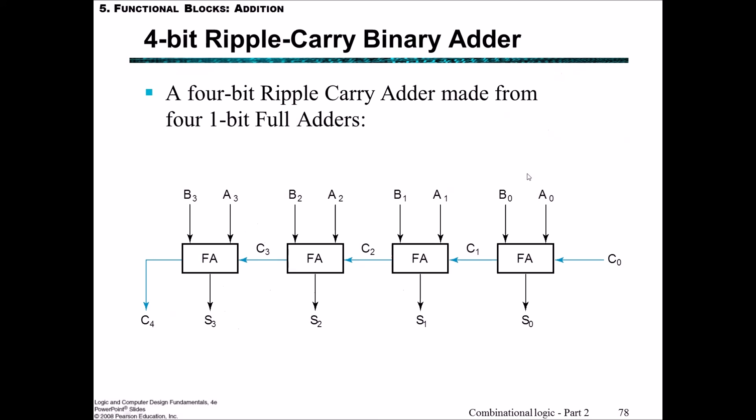The previous slide showed the general case; this is a more specific 4-bit ripple carry binary adder. The reason for the word 'ripple' is it's as if the ripple propagates through. Remembering it goes from 0 through n-1, we've got four bits: B3 and A3, carry 0 through carry 4, and the outputs we care about are S0 to 3 and carry 4.